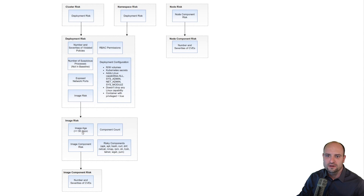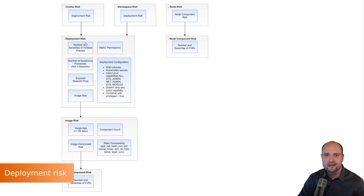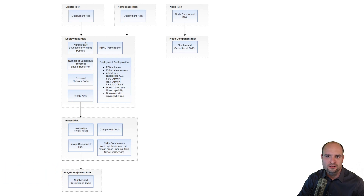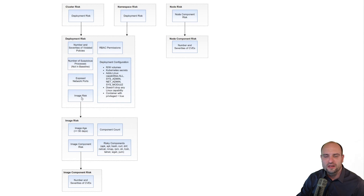After reviewing the four factors that determine the image risk, let's now focus on how the risk is computed for the deployments. In Red Hat ACS, the deployments include the core Kubernetes kinds that are able to create pods, like the Deployment, DeploymentConfig, StatefulSet, and DaemonSet kinds. The first factor is the risk of the images that are used in the deployment — deployments which use images with higher risk are themselves more risky.